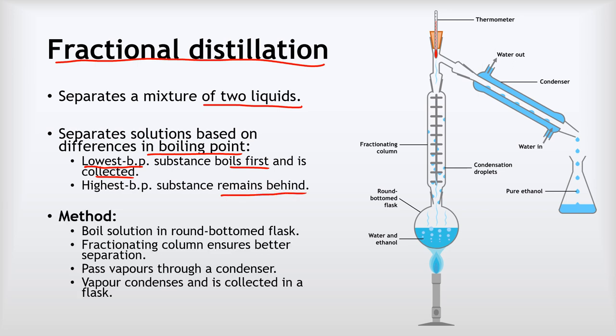The big difference between this and simple distillation is you have this fractionating column. We start off in the same way—we boil the solution in a round bottom flask, this might be a mixture of water and ethanol. In this case, ethanol boils at 78 degrees Celsius where water boils at 100 degrees Celsius, so the ethanol will boil first and then the vapors get passed through this fractionating column.